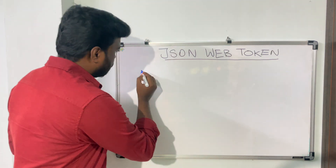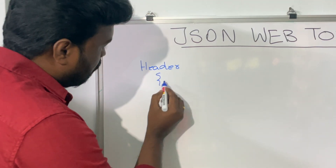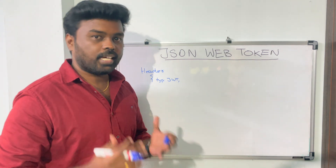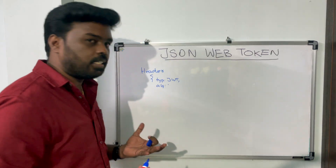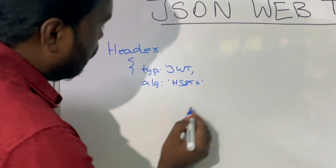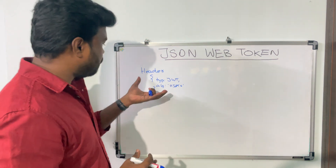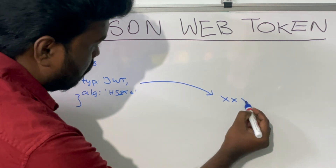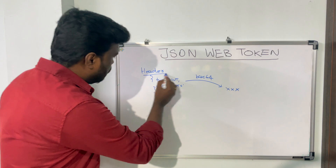In the header section, we usually have a couple of attributes. One is to specify the type of the token, which is obviously JWT. The other is to specify the hash algorithm that we are going to use to sign the token — for example, the HMAC SHA256 algorithm. Once you have this content, it needs to be base64 encoded, and that becomes the first part of your token. The second section of the JWT is the payload.